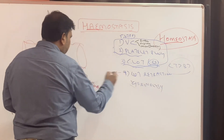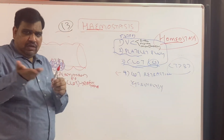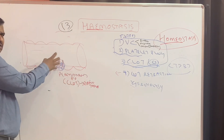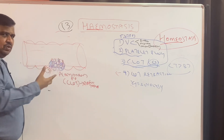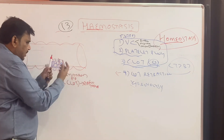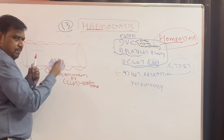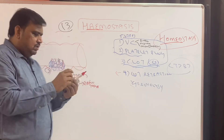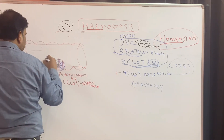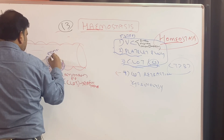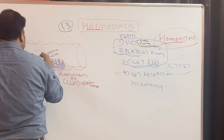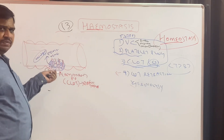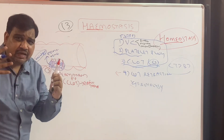Now coming to the fourth step: clot retraction. The clot has formed and the place is sealed, but the clot cannot remain as such — blood flow may be affected. So the clot will retract: the wound edges try to close. During clot retraction, platelet-derived growth factor and vascular epidermal growth factor are released, and angiogenesis is also possible at the site of rupture. The fourth step is clot retraction — tightening of the clot.